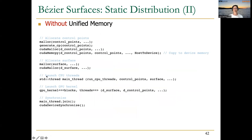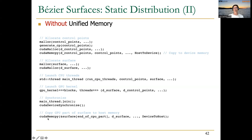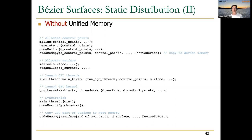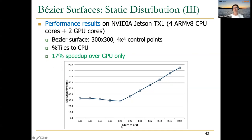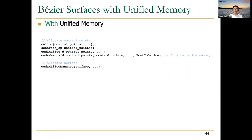Without unified memory, we launch CPU threads and a GPU kernel; at some point they synchronize and we copy the GPU-computed part of the surface back to the CPU. On an NVIDIA Jetson — with four CPU cores and two GPU cores — we observed up to 17% speedup over the GPU-only version when assigning 20% of tiles to the CPU. With unified memory, implementation is much easier: we don't need double allocation of the surface. Using CUDA malloc managed, we have a single surface, launch CPU threads and GPU kernel, and don't even need to explicitly copy GPU-computed tiles.